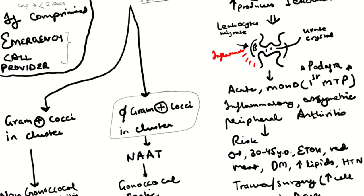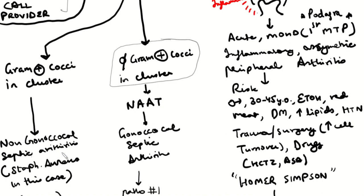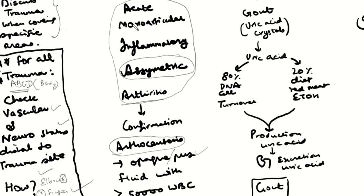If it's gonorrhea in the joint, you generally will not see gram-positive cocci in clusters. You perform a nucleic acid amplification test (NAAT), which confirms Neisseria gonorrhoeae — gonococcal septic arthritis. If gonorrhea is absent, it's non-gonococcal septic arthritis, and the biggest culprit is Staphylococcus aureus, where you'll see gram-positive cocci in a cluster.